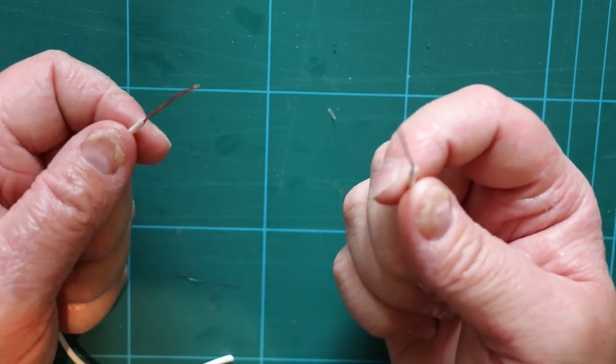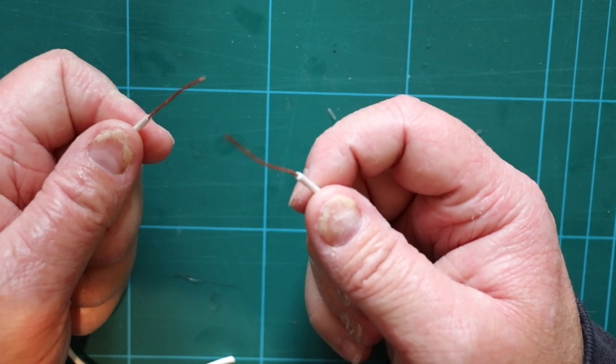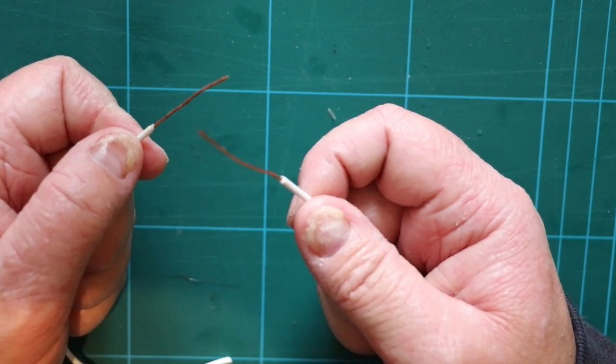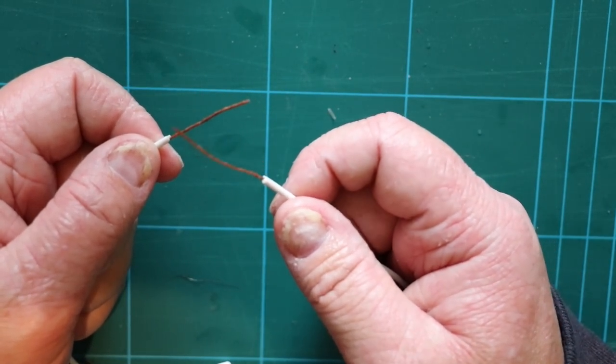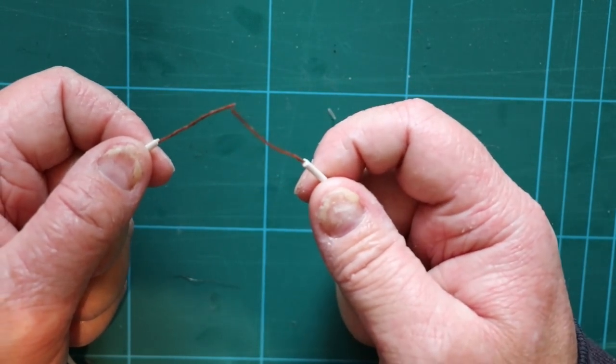Now this splice is actually used from when Western Union were sending cables across the United States as part of the telegraph expansion. And this is how they actually joined cables together.